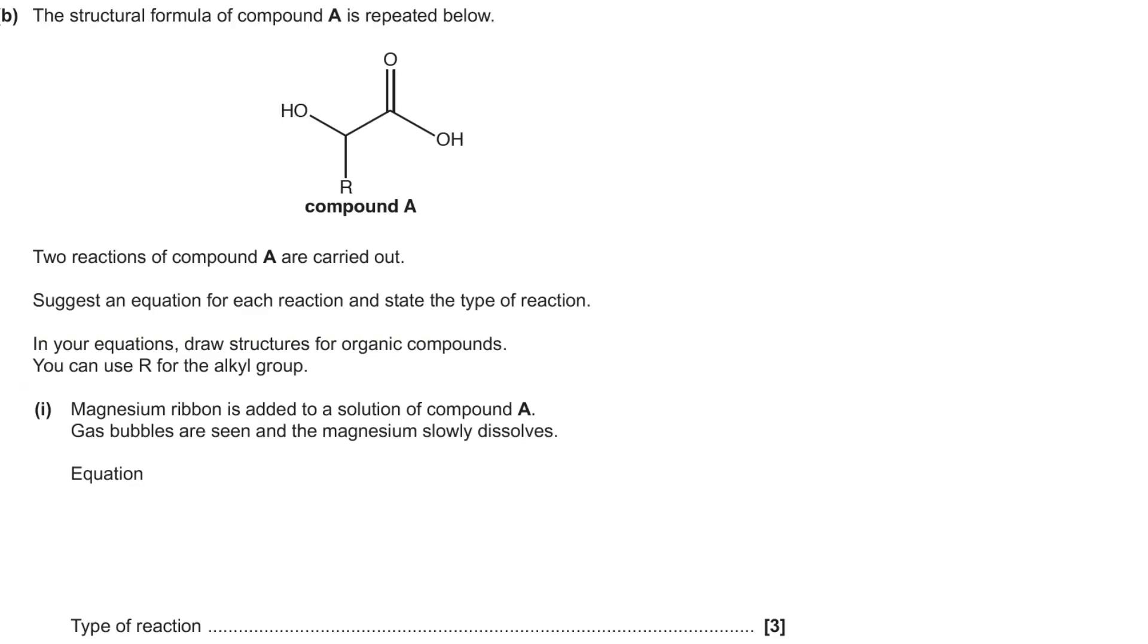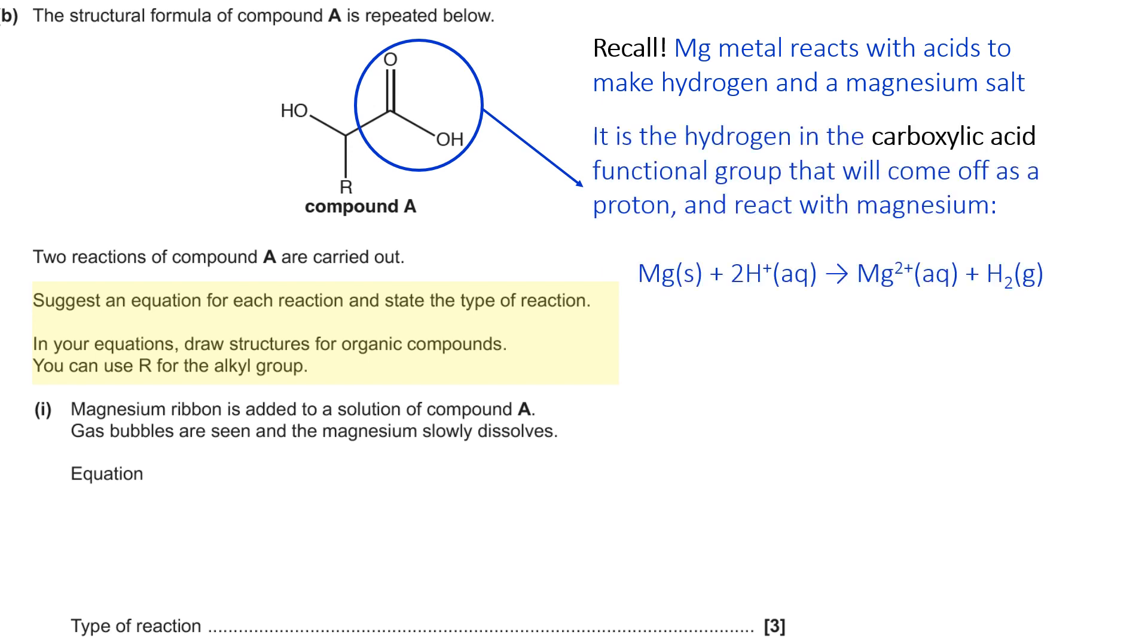So next it says the structural formula of compound A is repeated below. And then two reactions of compound A are carried out. There's only one of them on the screen at the moment. I'll do the other one in a couple of minutes. So the instructions tell us to suggest an equation for each reaction and state the type of reaction. And in your equations, draw structures for organic compounds. I'm going to park that thought and come back to it in a minute or so. So a bit of recall is needed here because magnesium ribbon is the same as magnesium metal. So it's added to a solution of compound A, which we know is an acid. So magnesium reacts with acids to make hydrogen and the magnesium salt.